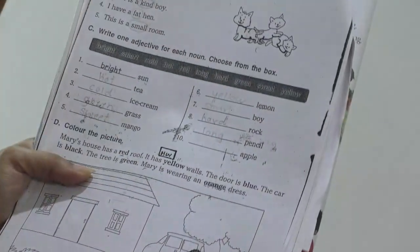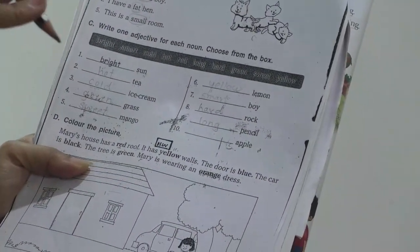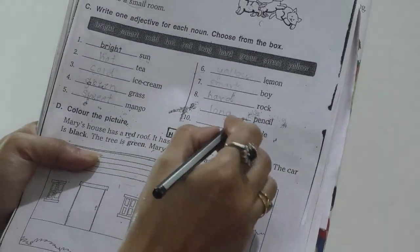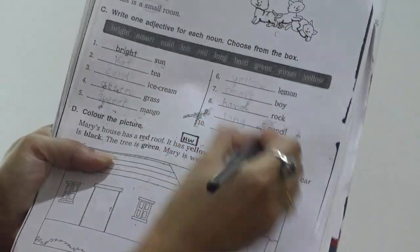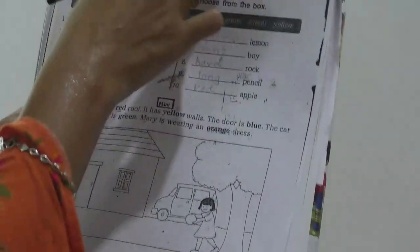Next is dash pencil. Here you can use long pencil. You can see. I have pencil. It is long pencil, right? And the last is red apple. Again the color red apple. I hope you understood this.